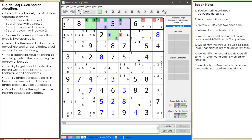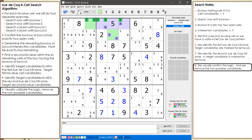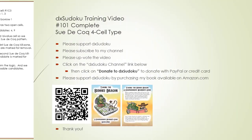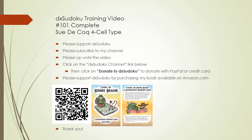This is not so much a special case, but I just wanted to show you how both kill zones can have target candidates to kill. We visually confirm the logic and remove the non-possible candidates from the puzzle. This completes DX Sudoku training video number 101. Please support DX Sudoku. Thank you for watching.